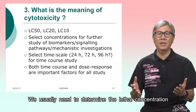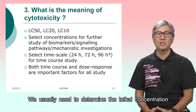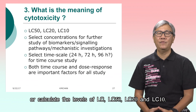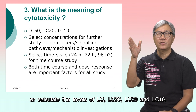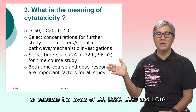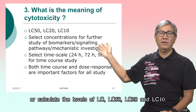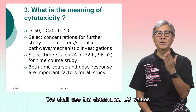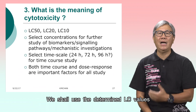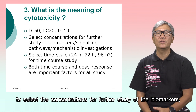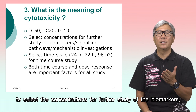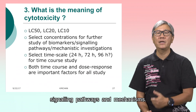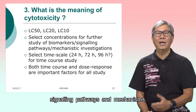We usually need to determine the lethal concentration or calculate the levels of LC: LC50, LC20, and LC10. We shall use the determined LC values to select concentrations for certain studies of biomarkers, cellular pathways, and mechanisms.